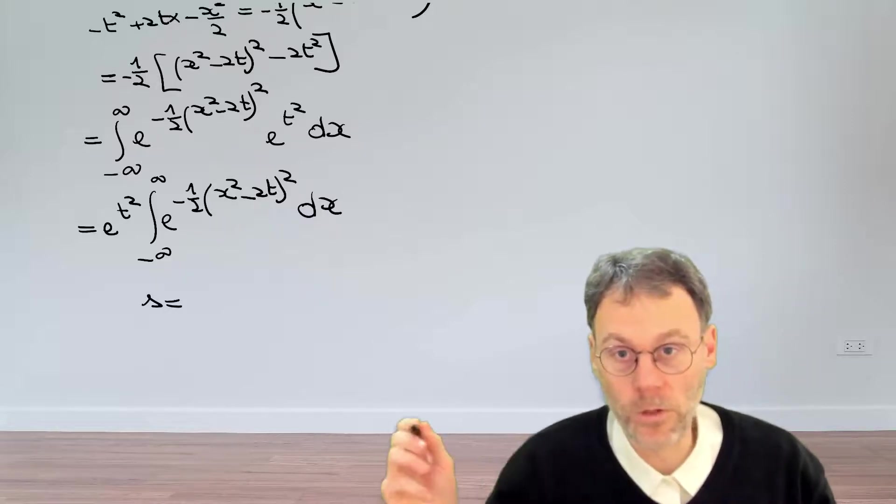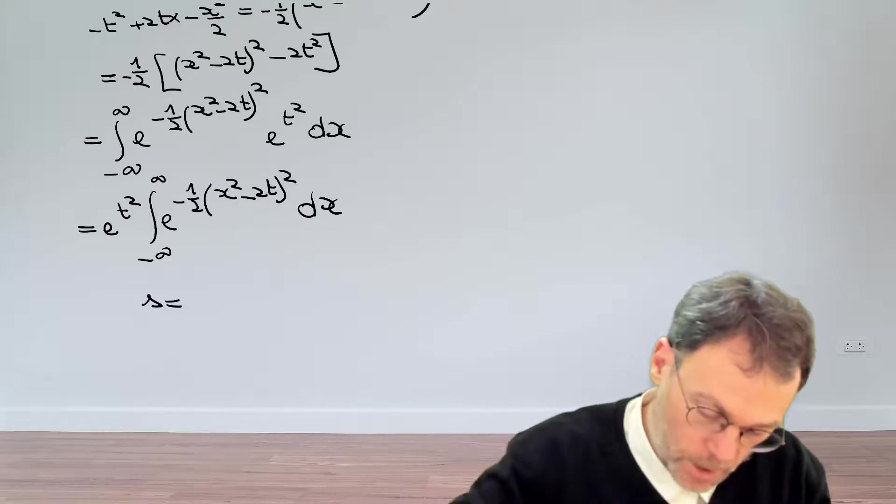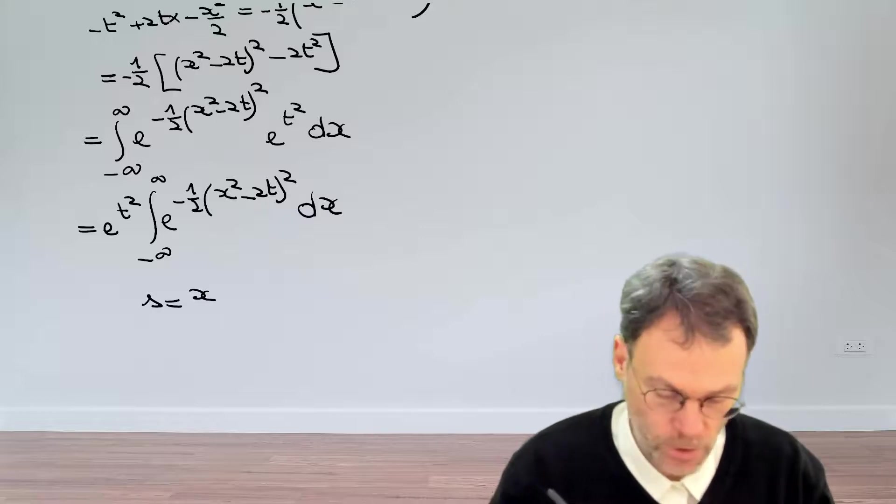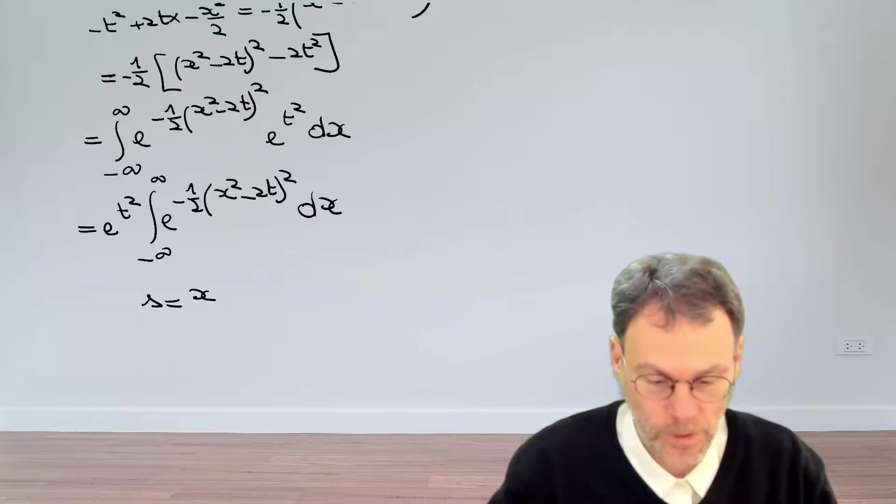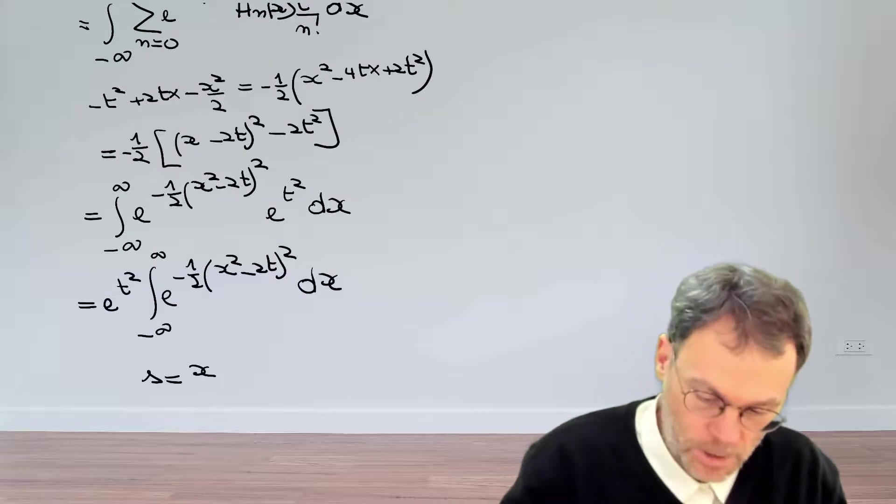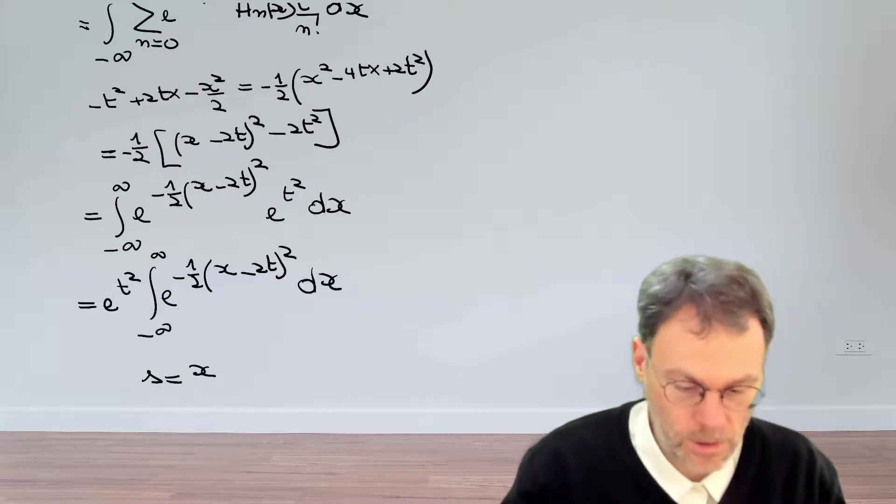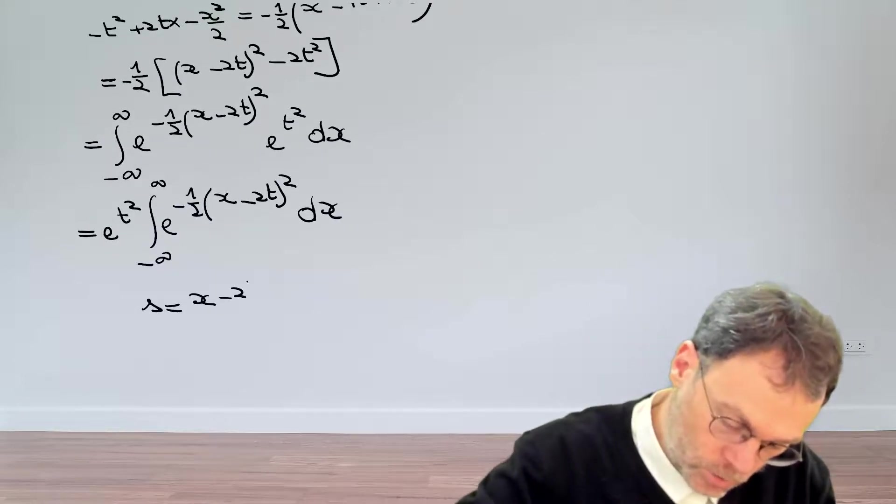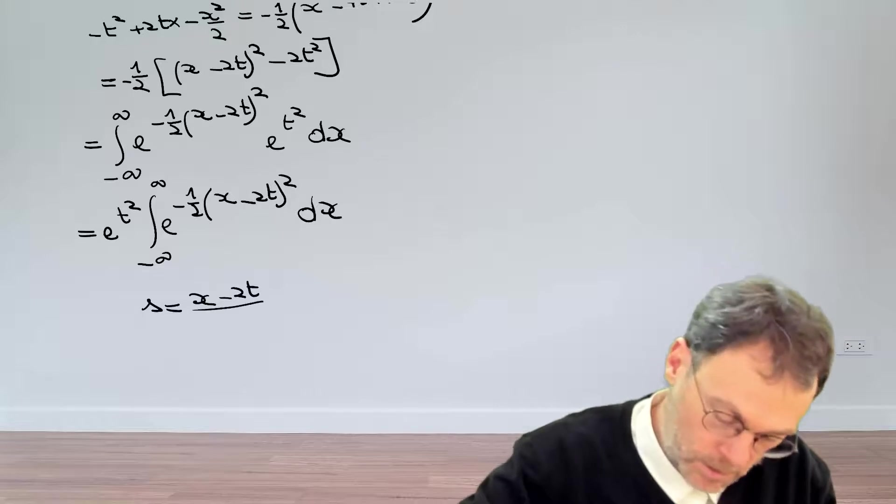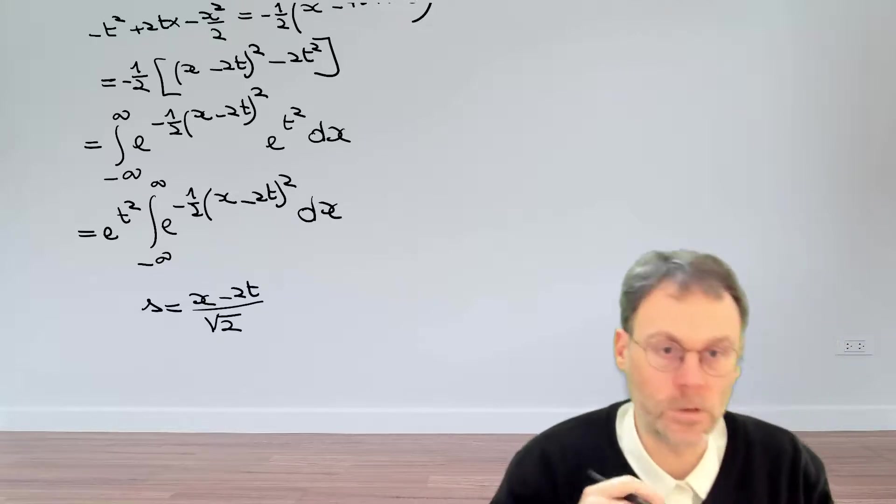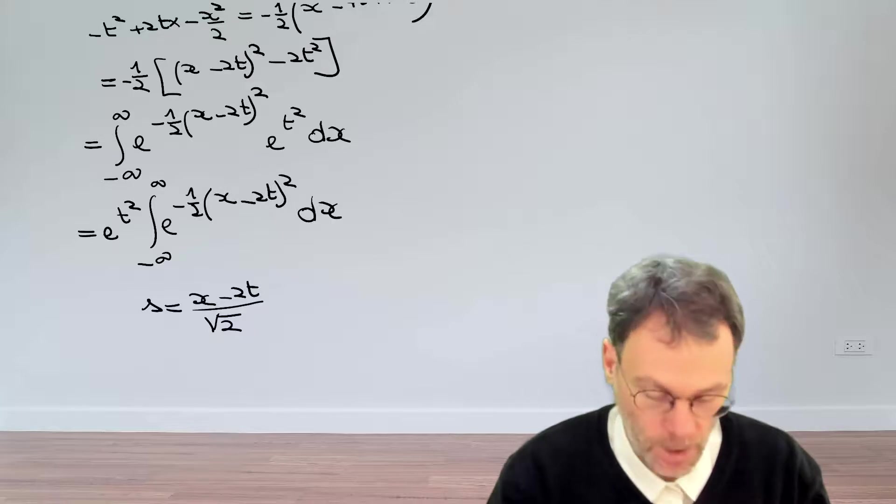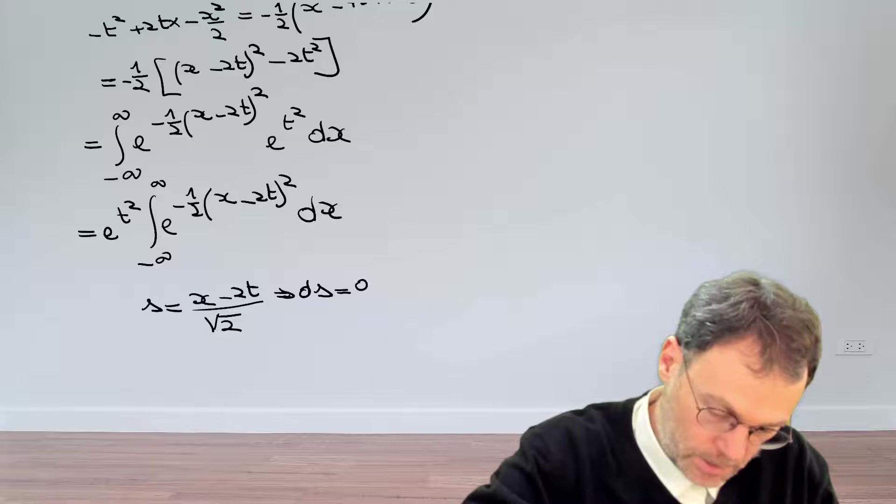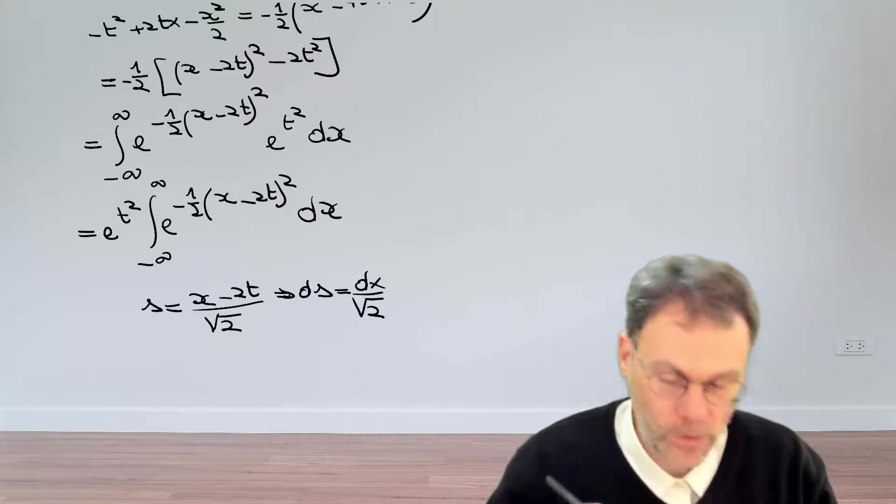So we introduce a new variable s, short for something. So s should, in our case, be equal to x minus 2t. And this 1 over 2 then becomes 1 over the square root of 2. So if we make that substitution, we have that ds is dx divided by the square root of 2.